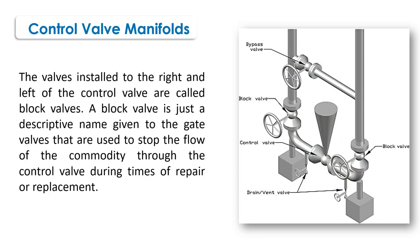The valves installed to the right and left of the control valve are called block valves or isolation valves. The block valve is just a descriptive name given to the gate valves that are used to stop the flow of the commodity through the control valve during times of repair or replacement.